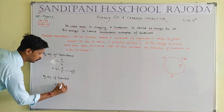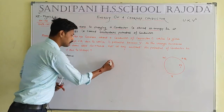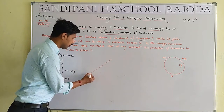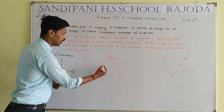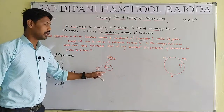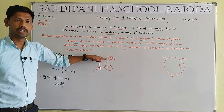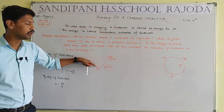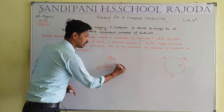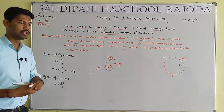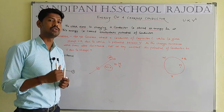By definition of potential: V equals W by Q. V is the potential. When we carry any positive charge from infinity to any point in an electric field, the total amount of work done is known as the potential. So V equals W by Q, where W is total work done and Q is the charge being brought from infinity.